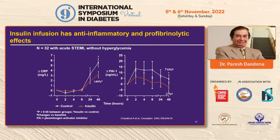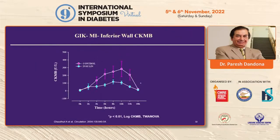C-reactive protein concentrations were significantly diminished by about 44% with insulin, and PAI-1 — an agent which inhibits fibrinolysis — was also suppressed, meaning insulin potentially increases fibrinolysis. Interestingly, patients who received insulin infusion showed a reduced CKMB increase, meaning myocardial cell death was significantly diminished.